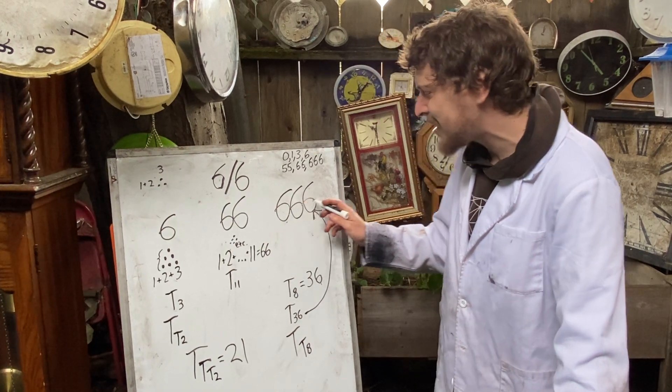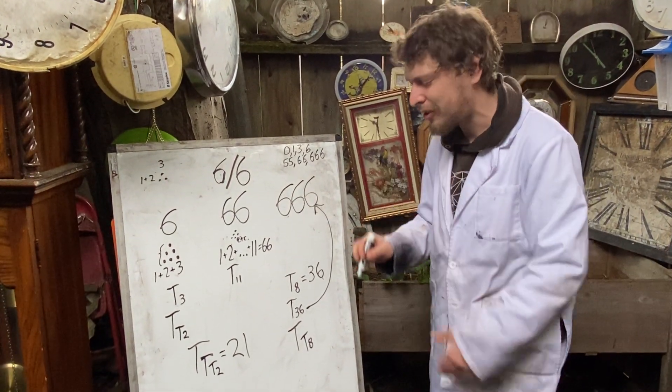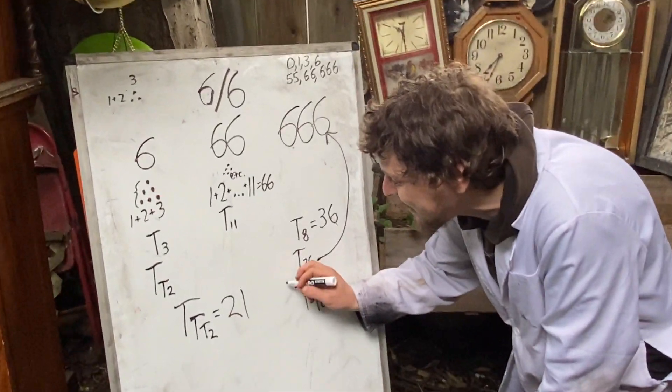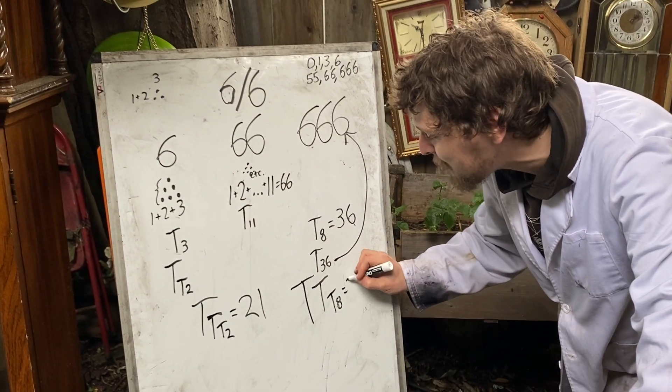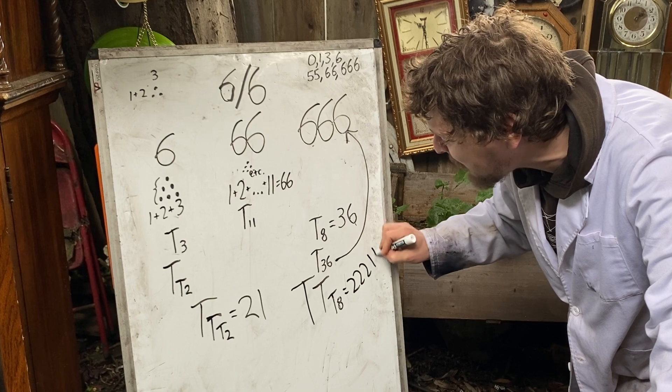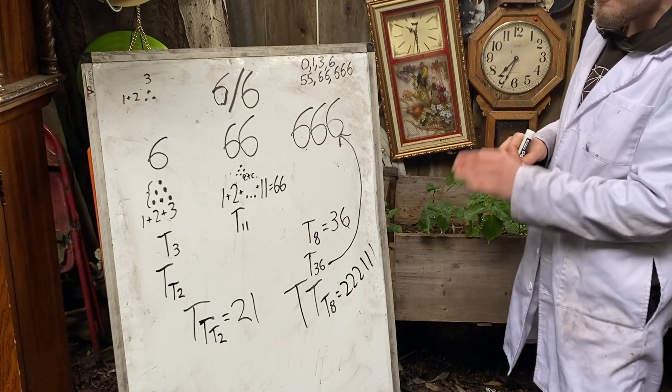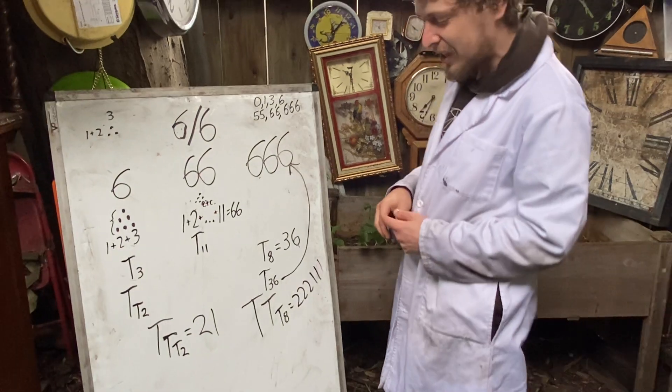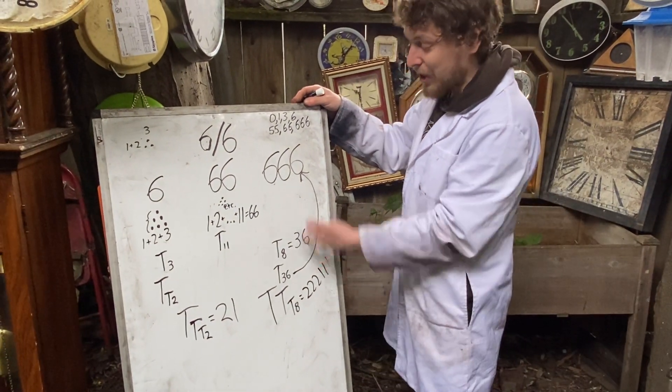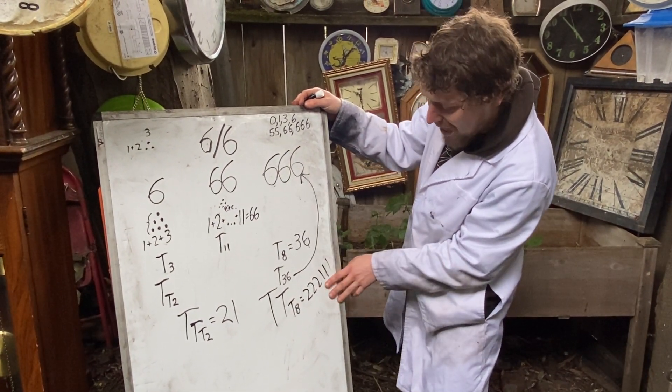One little hint of that is that the 6666th triangular number, which we could say is T-T-T-8 equals 222111, 222111. Now this is very 666-esque, because I could build it from this in a few neat little ways.